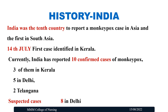Let's see the history of monkeypox in India. India was the 10th country to report a monkeypox case in Asia and the first in South Asia. The first case was identified on 14th July in Kerala. Currently in India, we have 10 confirmed cases of monkeypox — 3 in Kerala, 5 in Delhi, and 2 in Telangana. We also have some suspected cases, mainly 8 cases in Delhi.